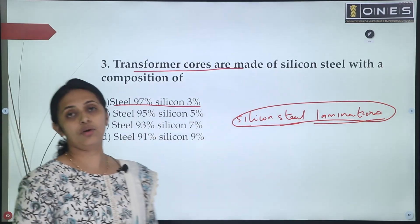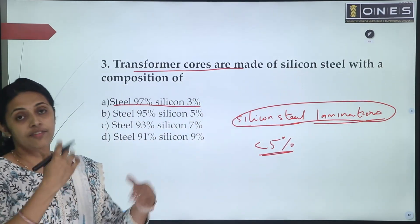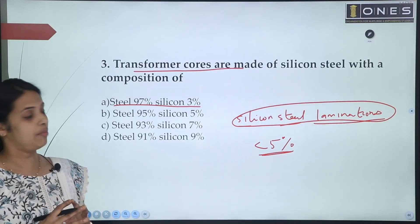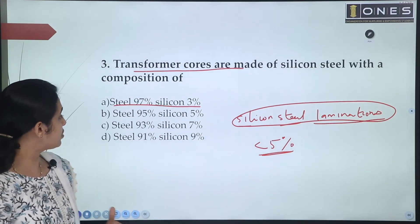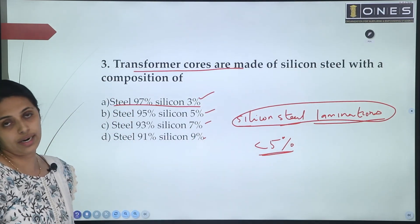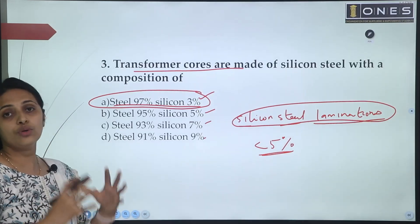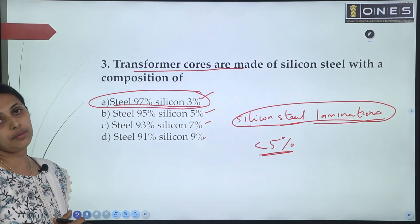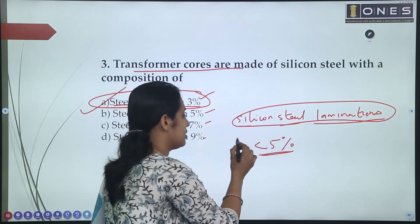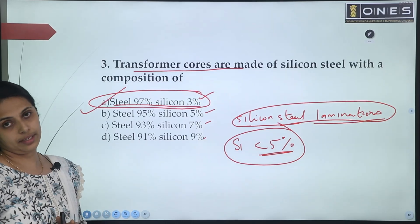Regarding the silicon percentage: the silicon content used in transformer cores is less than 5%. So option A — less than 5% of silicon content — is the correct answer for the transformer core material.